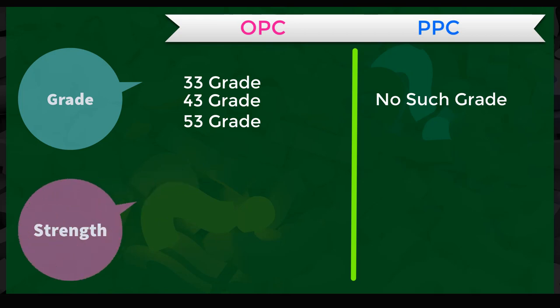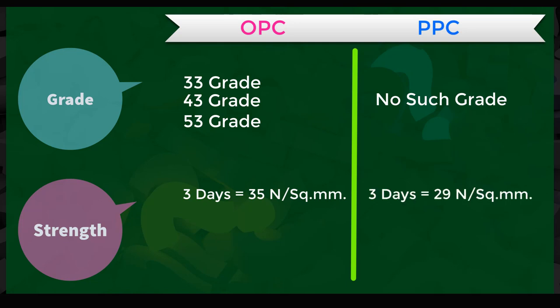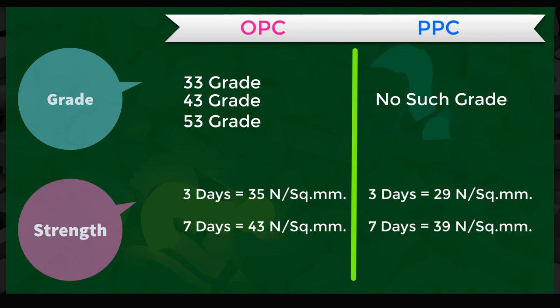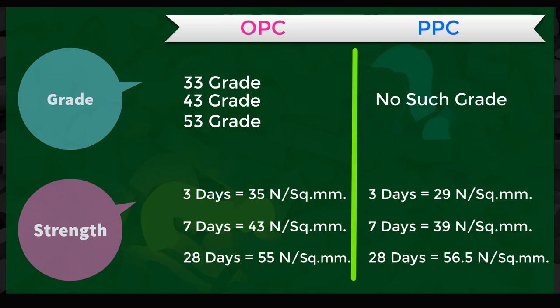Now let's move to the strength criteria. For OPC cement, three-day attainable strength is about 35 N/mm², whereas PPC shows 29 N/mm². At seven days, OPC strength is 43 N/mm² and PPC is 39 N/mm². The final target strength of OPC is 55 N/mm², whereas PPC is 56.5 N/mm².